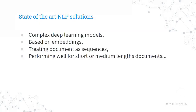For the state of the art in document classification, there are complex deep learning models, mostly transformers like BERT, which are based on embeddings and treat documents as a sequence. They perform well for short and medium length documents, but our documents were thousands or over a few thousand words long, so we were unable to use these pre-trained models because the texts were just too long.